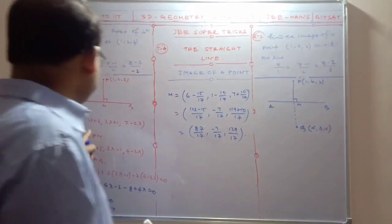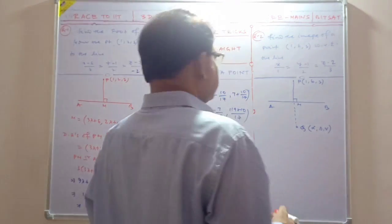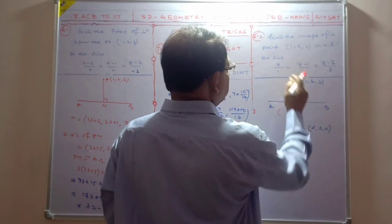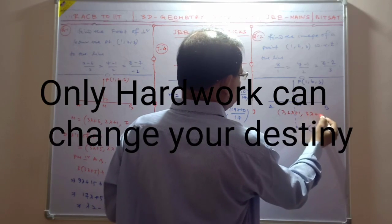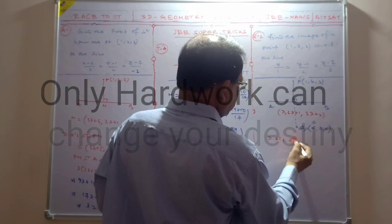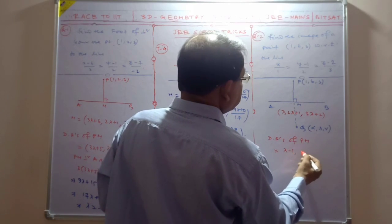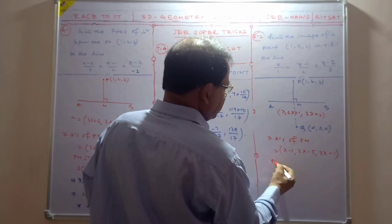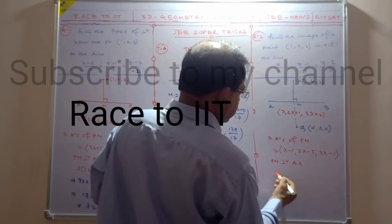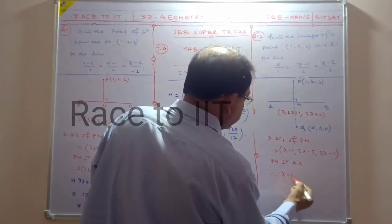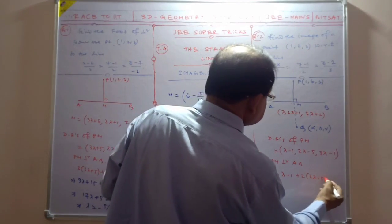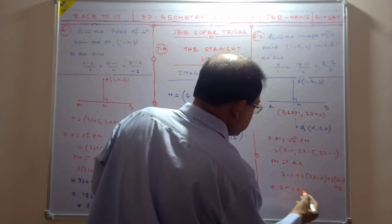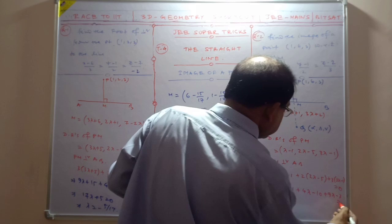Any point on this line is 2 lambda plus 1 and 3 lambda plus 2. Direction ratios of PM are lambda minus 1, 2 lambda minus 5, and 3 lambda minus 1. PM is perpendicular on AB, so lambda minus 1 plus twice of this and plus 3 of 3 lambda minus 1 equals zero. Lambda minus 1, 4 lambda minus 10, 9 lambda minus 3 equal to zero.